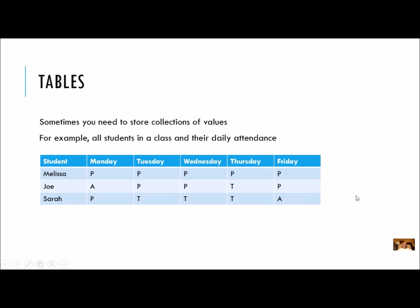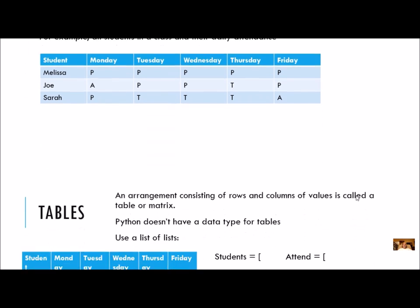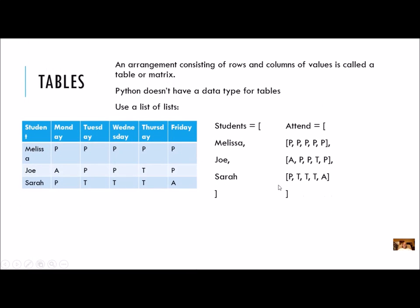So here's an alternative. An arrangement consisting of rows and columns of values is called a table or matrix — I'm sure you've seen this in math class. Python doesn't have a data type just for tables, so what we're going to do instead is use a list of lists.